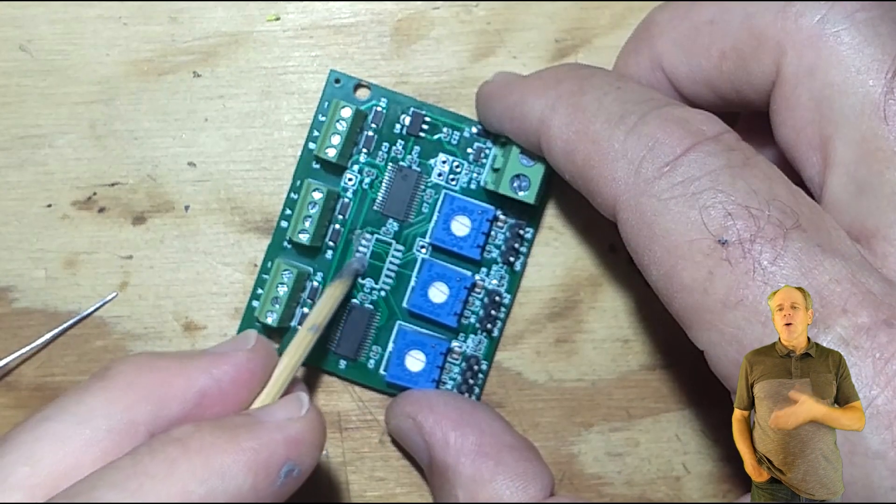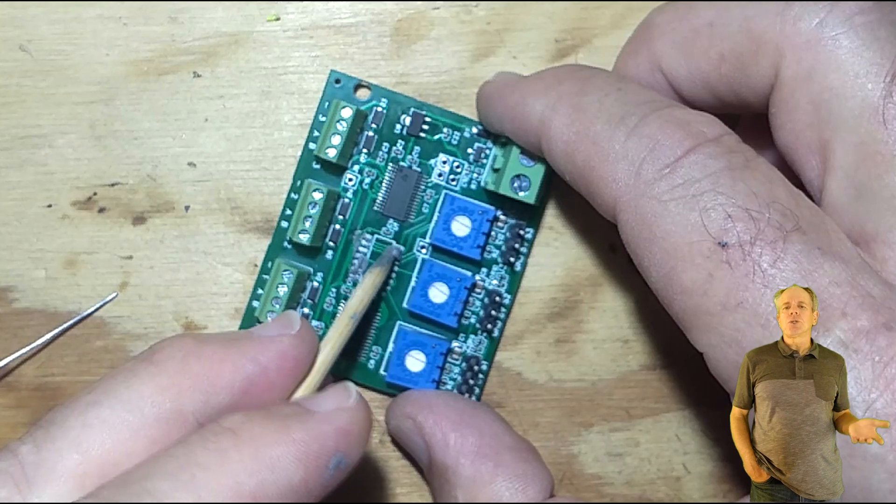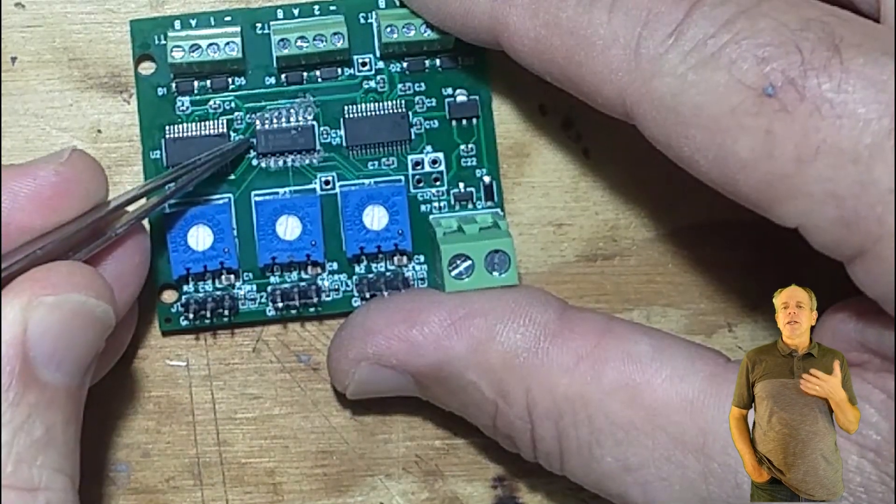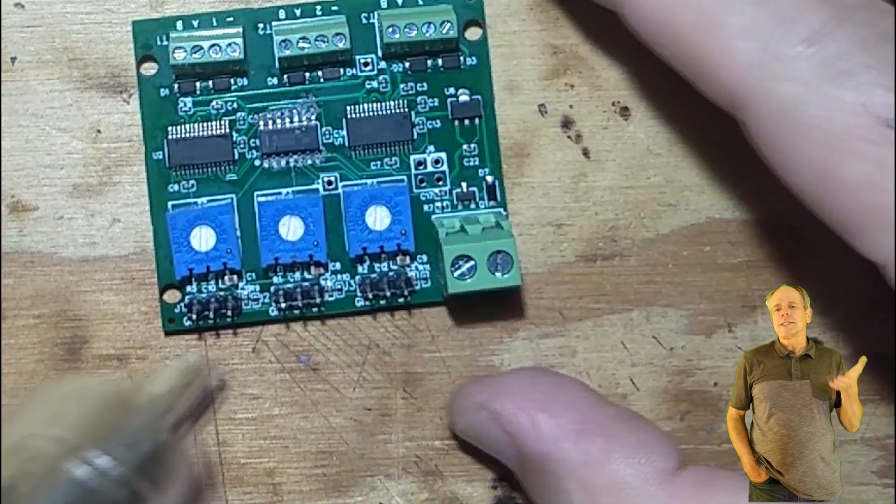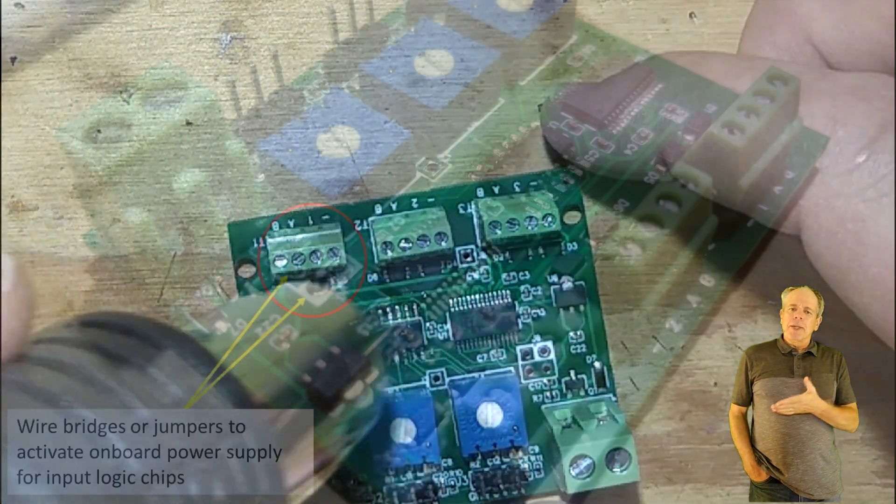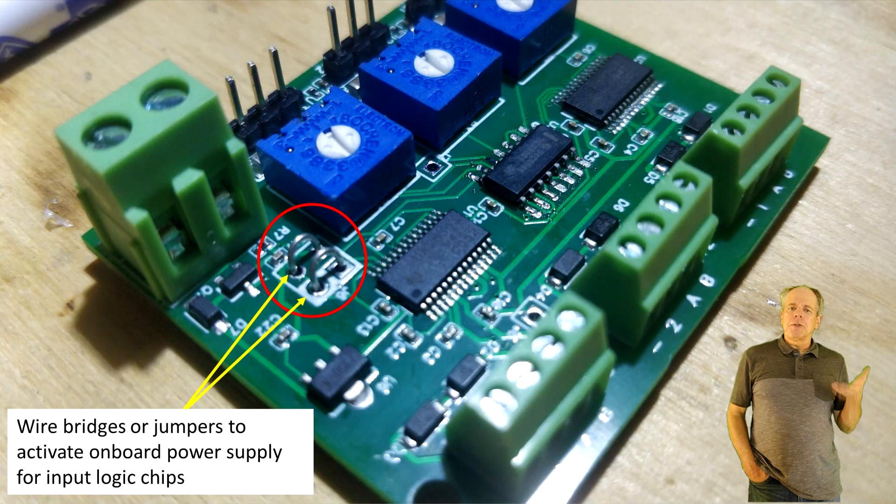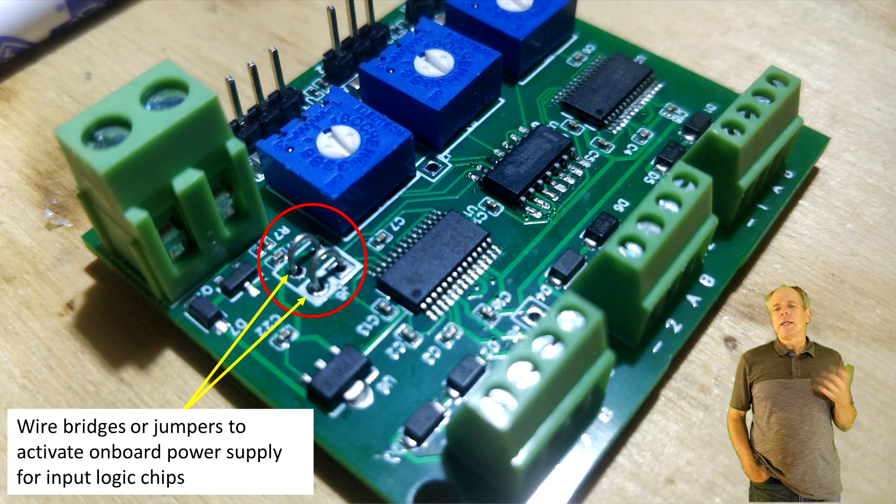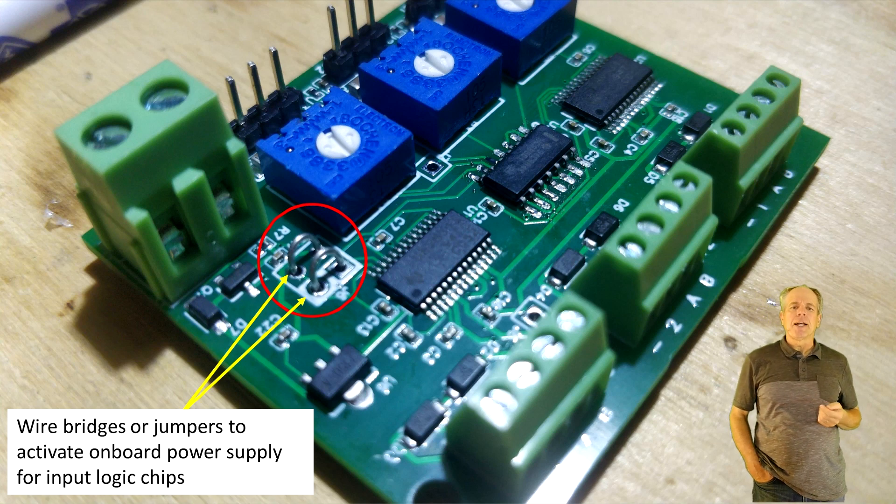You install any missing components and add the bridges to connect the power supply if you want to use the board as a standalone board. Either install jumper pins or solder some wires between the marked pins. Or leave them open if you want to operate the board from a PCA9685 driver.